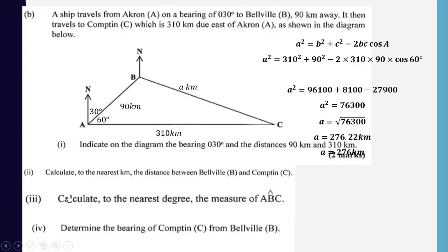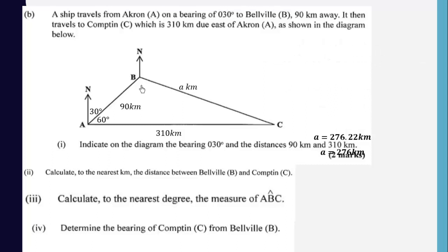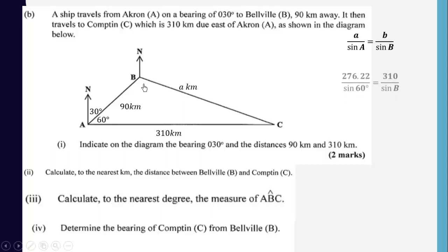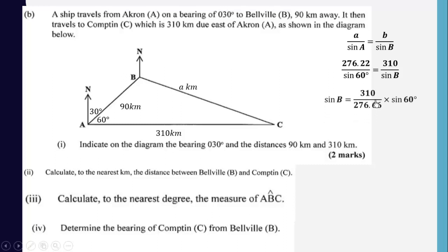The next part asks us to calculate, to the nearest degree, the measure of angle ABC. Using the sine rule: A/sin(A) = B/sin(B), where B is the angle we are looking for. We substitute the known values into the formula, make sin(B) the subject, and simplify.